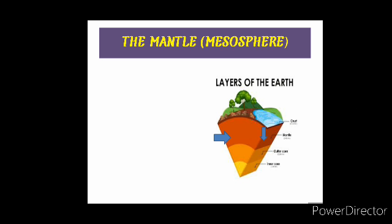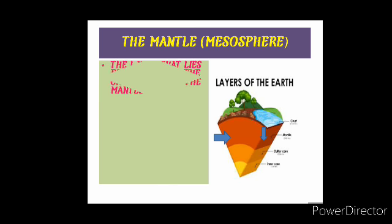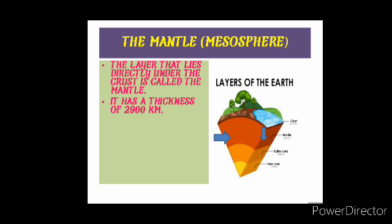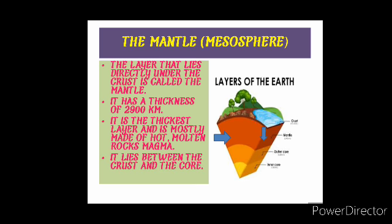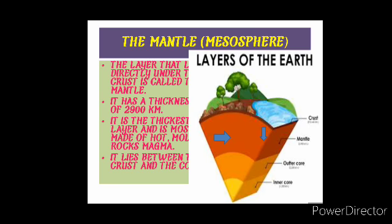The mantle, also known as mesosphere, is the layer that lies directly under the crust. It has a thickness of 2,900 kilometers. It is the thickest layer and is mostly made of hot molten rock called magma. It lies between the crust and the core.